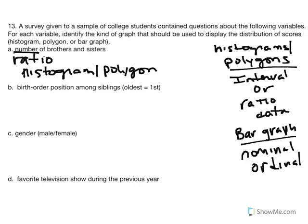Continuous means a value that can be infinitely divided into smaller pieces — it can be expressed as a fraction, decimal, or percentage. A discrete variable is just a category that cannot be divided into smaller pieces. For number of brothers and sisters, this is a discrete variable — we cannot report a fraction of a sibling. So this is an example of a ratio scale of measurement that is discrete.